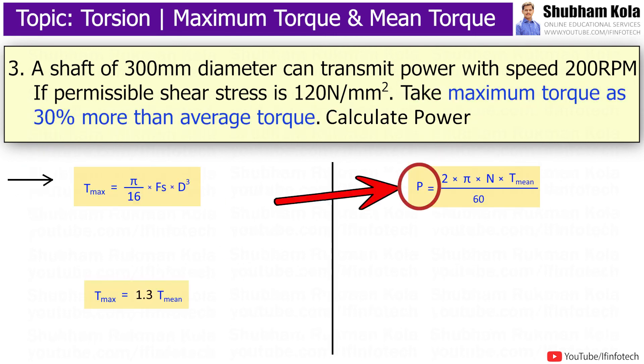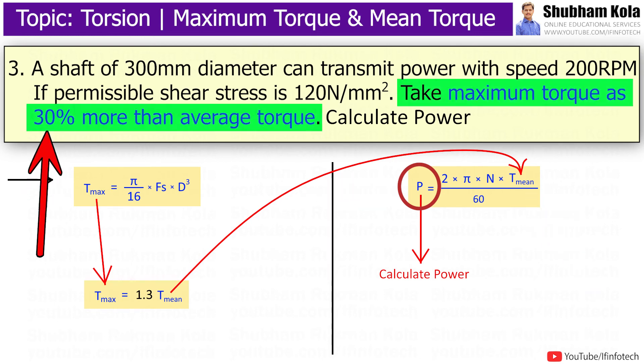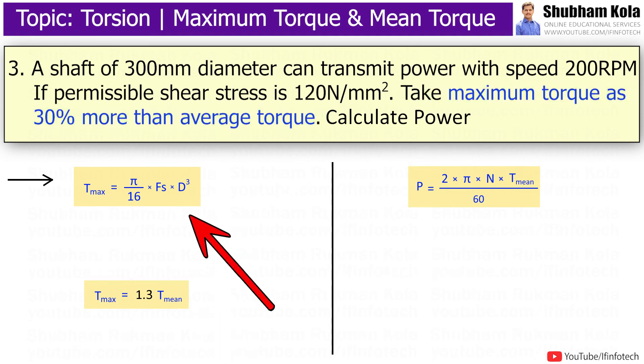Here in problem, we have to calculate power. And to calculate power, we need to have the value of mean torque, i.e. average torque. And maximum torque is 30% more than average torque given in the problem. Therefore, T_max = 1.3T_min. The maximum torque T_max = π/16·fs·d³. And here permissible shear stress fs is 120 N/mm². And diameter d is 300 mm. Therefore, the value of maximum torque we got 636172.514 Nm.